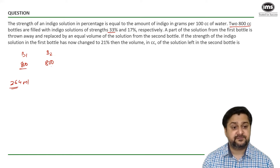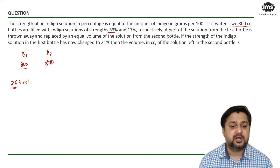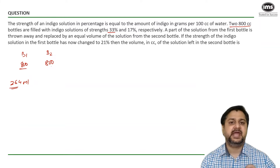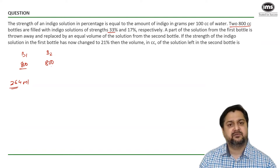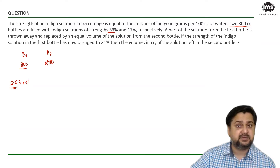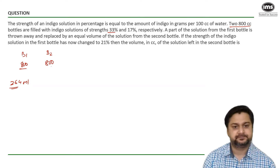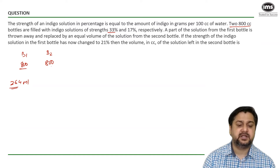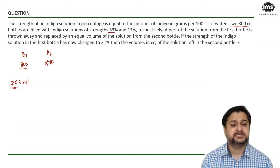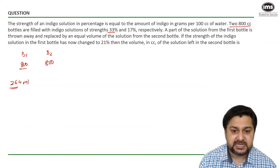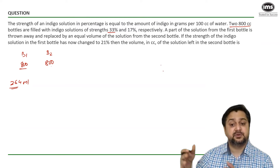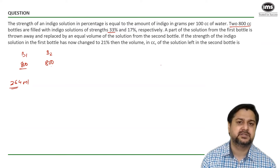A part of the solution from the first bottle is thrown away and replaced by an equal volume of solution from the second bottle. So if you throw away x amount from bottle 1, the same x amount is poured from bottle 2 into bottle 1. The strength of the indigo solution in bottle 1 is now changed to 21%, and the question asks how much solution is left in the second bottle.